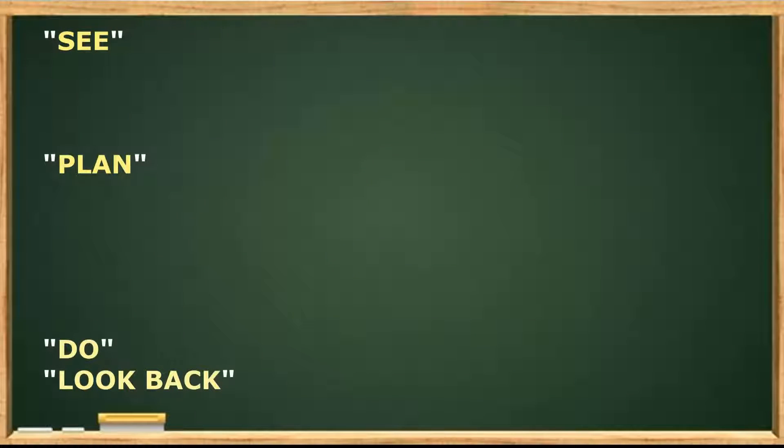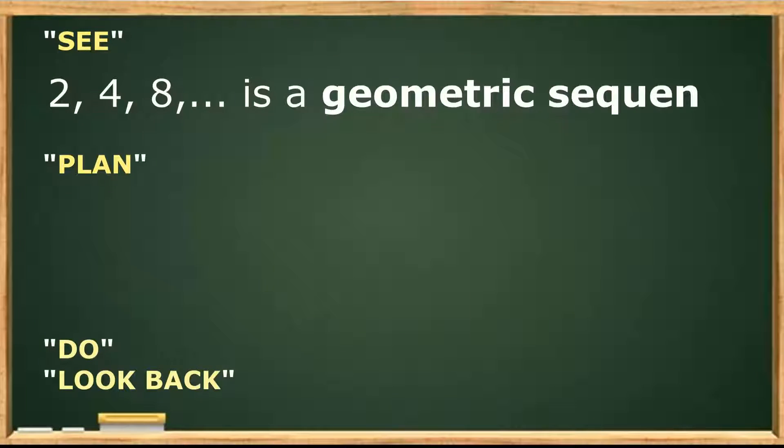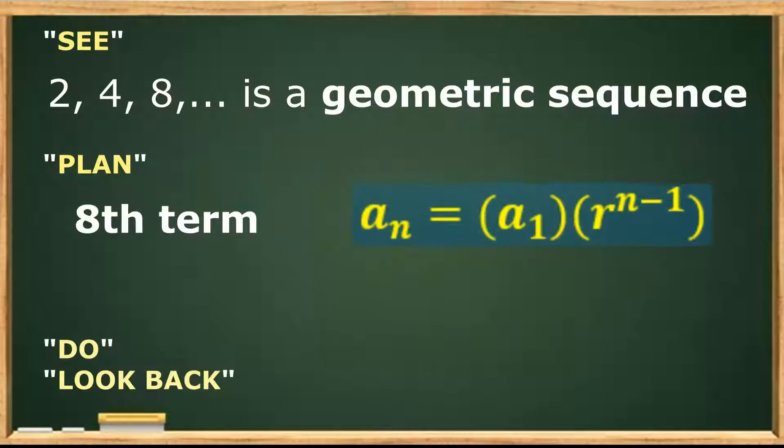To solve this problem, we will be using the See, Plan, Do, Look Back procedure. We will be using the See, Plan, Do, Look Back procedure. As we can see, 2, 4, 8 is a geometric sequence. Finding the number of ancestors in the eighth generation means finding the eighth term using the nth term formula.